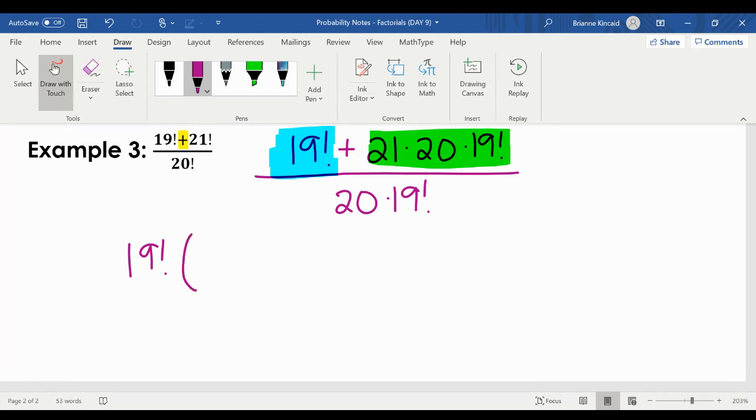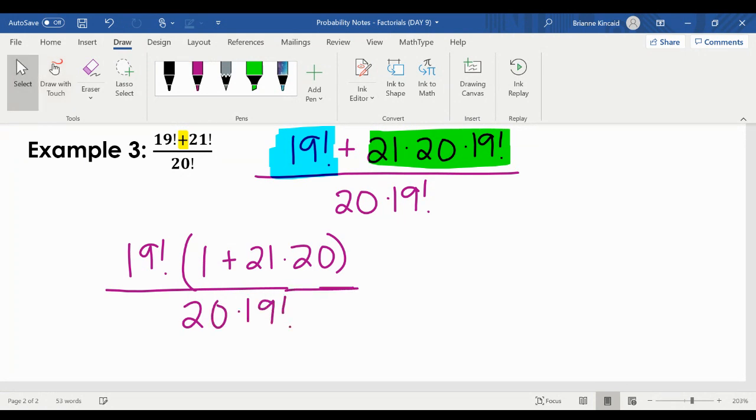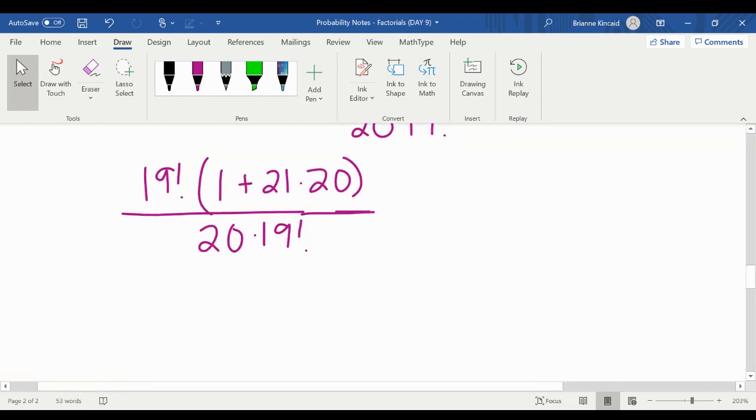When I take it out from what's highlighted in blue, I'm left with 1. And when I take it out from what's highlighted in green, I'm left with 21 times 20. This is all over still, 20 times 19 factorial.